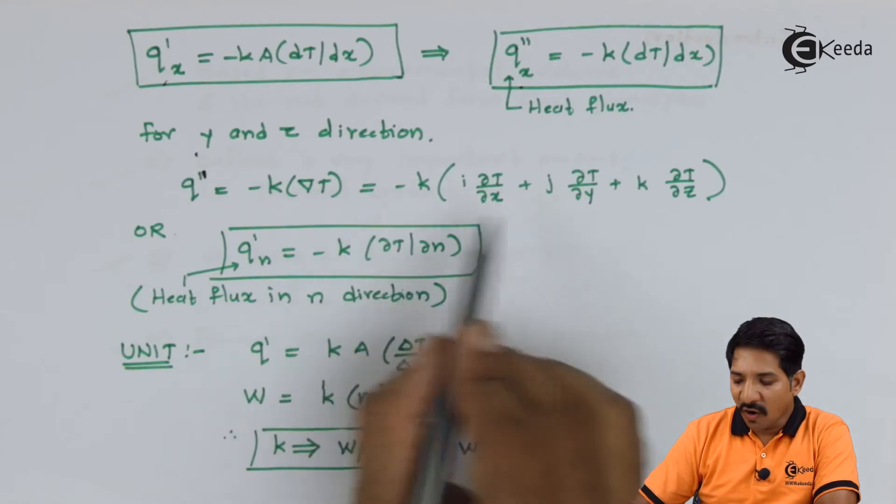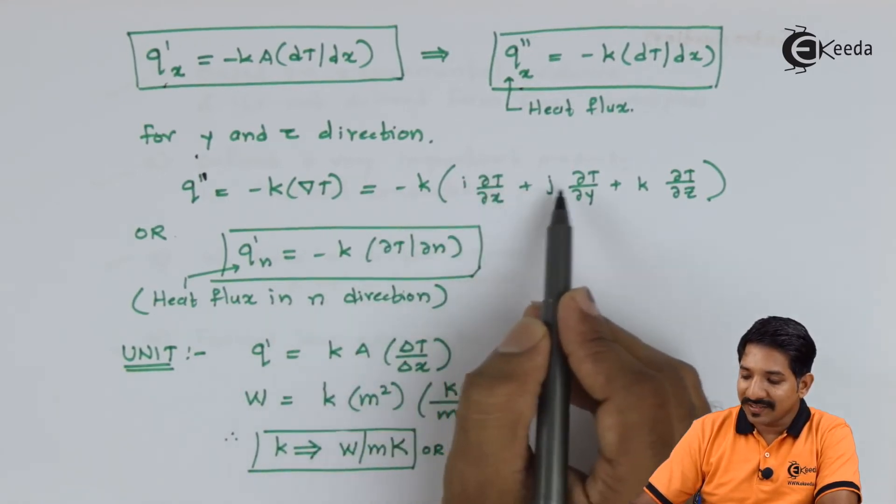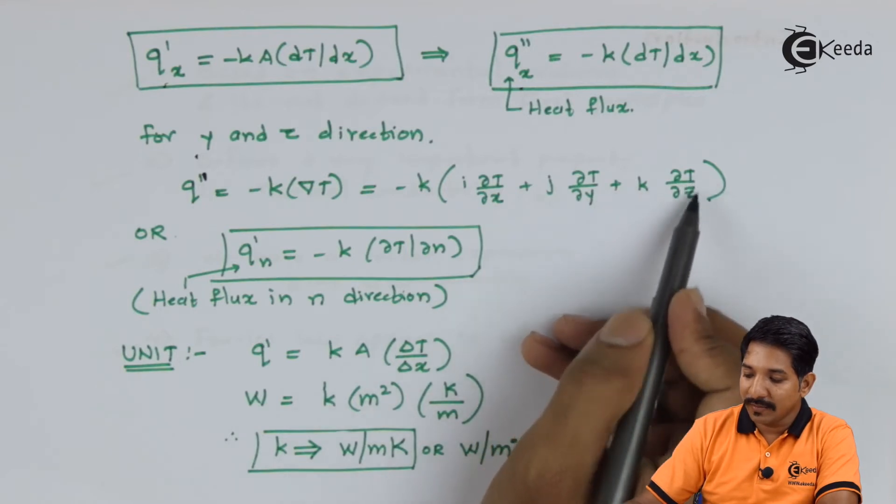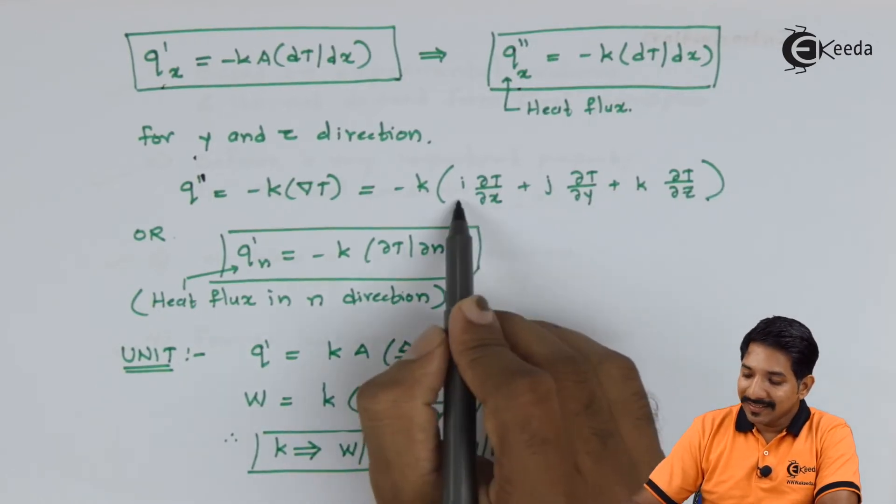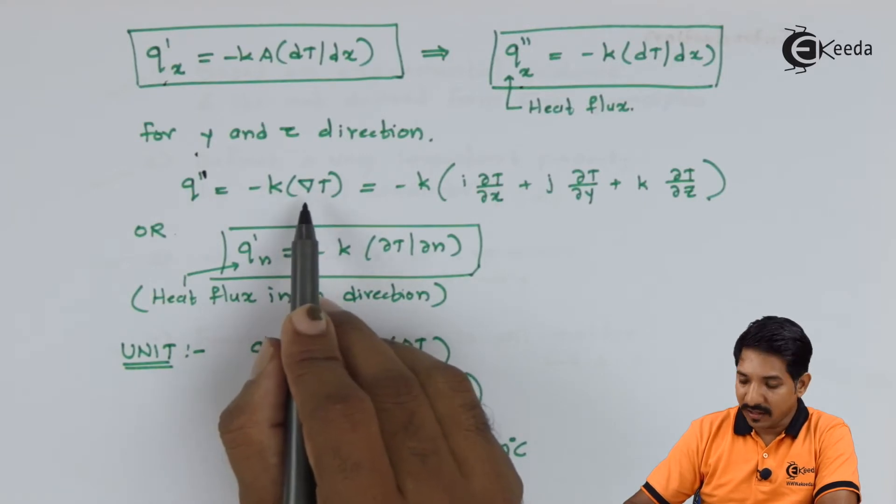Now this is elaborately written as minus K times i partial T by partial x plus j partial T by partial y plus k partial T by partial z. Now here i, j, k are nothing but the del operator.